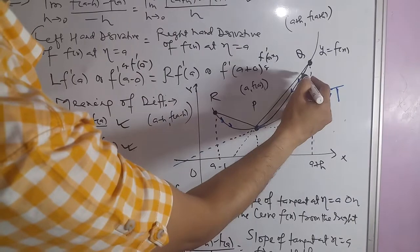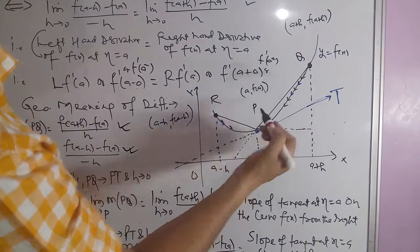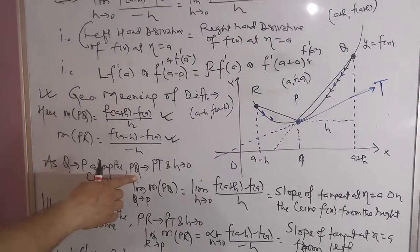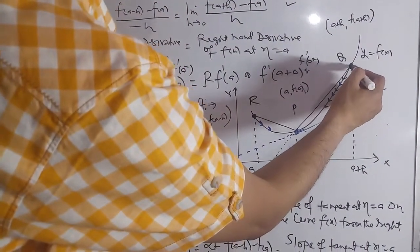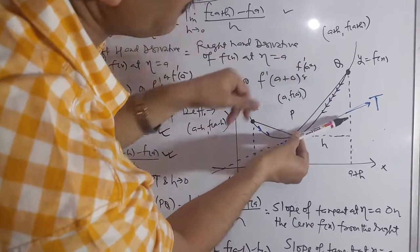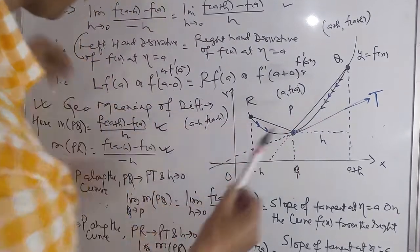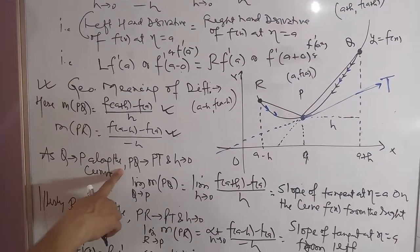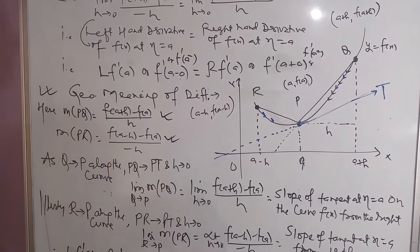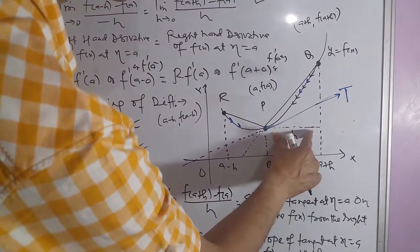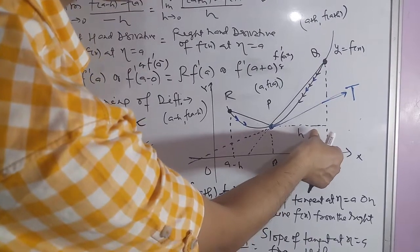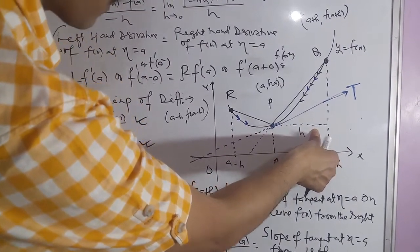Now, if Q approaches P along the curve, the chord PQ tends to the tangent PT. As Q approaches P, h continuously becomes infinitely small, so h tends to 0.